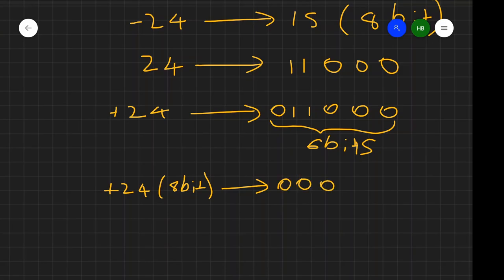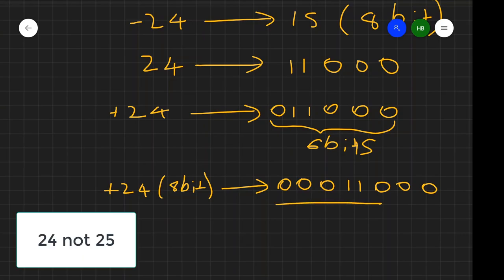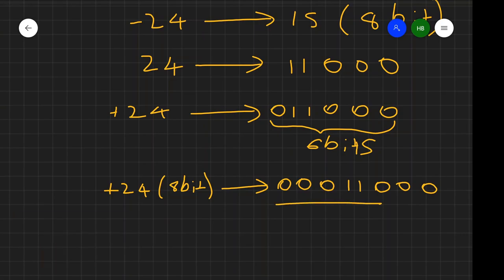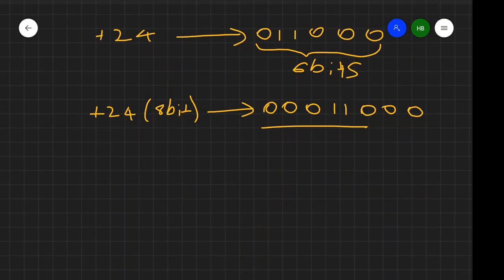This will become 00011000. This is positive 24 in 8-bit mode of 1's complement. Now let's convert this into negative 24 in 8-bit. Just like in the normal way, convert all 0s into 1s and 1s into 0s. Here it will become 11100111. This is negative 24 in 8 bits, in 1's complement.